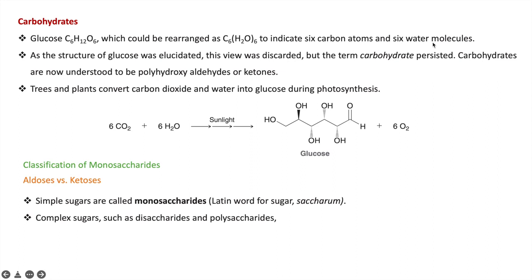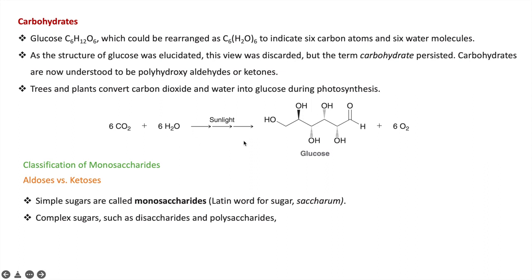Six carbon atoms are attached with six water molecules, meaning the carbons are hydrated. However, after later structural elucidation, it was found that carbohydrates are not simply hydrated carbon, but rather have several polyhydroxyl groups attached to carbon — present in the form of polyhydroxy aldehydes and polyhydroxy ketones. The name 'carbohydrate' persisted. Plants and trees convert carbon dioxide and water into glucose in their leaves by photosynthesis, using sunlight, and glucose is the source of energy.